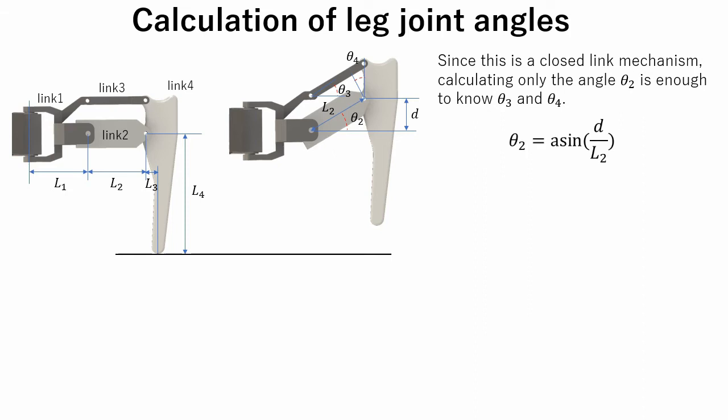Angle theta 2 can be obtained using inverse function of sine. Theta 3 and theta 4 are required only for the gazebo simulation. Since in URDF file we cannot express closed links, we have to set transmission for each joint.